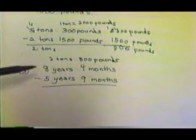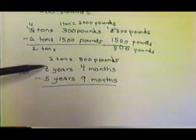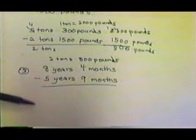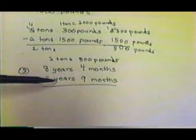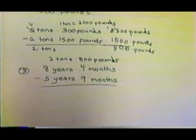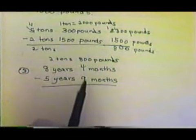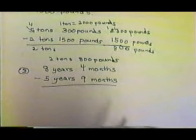This time, we're going to work with time. We have 8 years, 4 months, and from that, we want to subtract 5 years and 9 months. So, when we get ready to subtract, we want to subtract 9 from 4, but we can't do that.